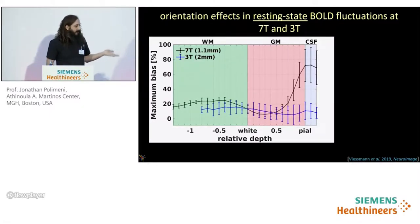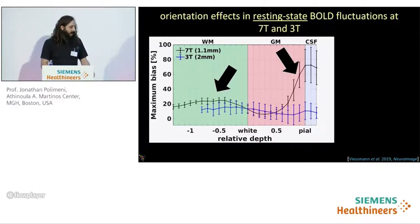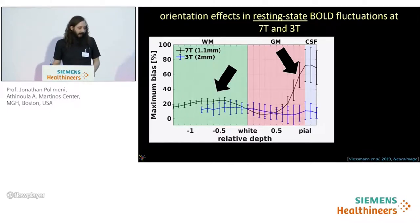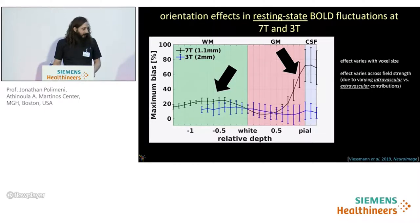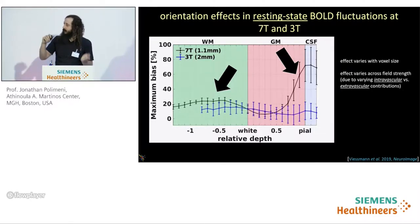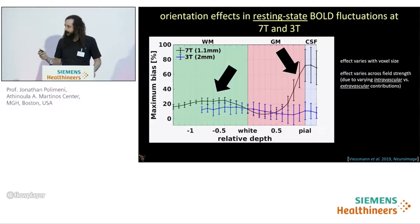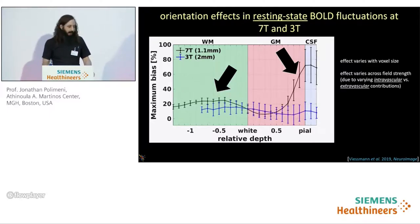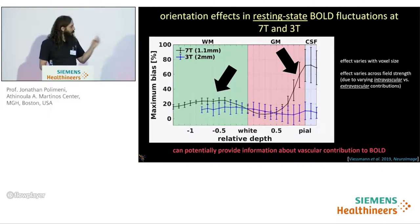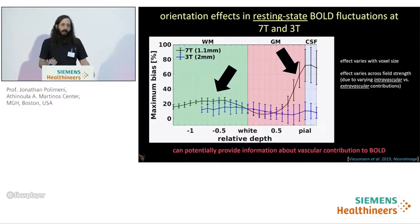To summarize: we see orientation effects in resting state BOLD fluctuations at both 7 Tesla and 3 Tesla. These vary with cortical depth — from the pial surface to the superficial white matter — as voxels sample from different levels of the vascular hierarchy. This effect also varies with voxel size and field strength, due to different intravascular and extravascular contributions. This is a sizable bias, but the good news is that it's a function of cortical orientation, which is easy to estimate, so we think it will be straightforward to correct. It can also potentially provide information about vascular contributions to candidate BOLD fMRI acquisition techniques.